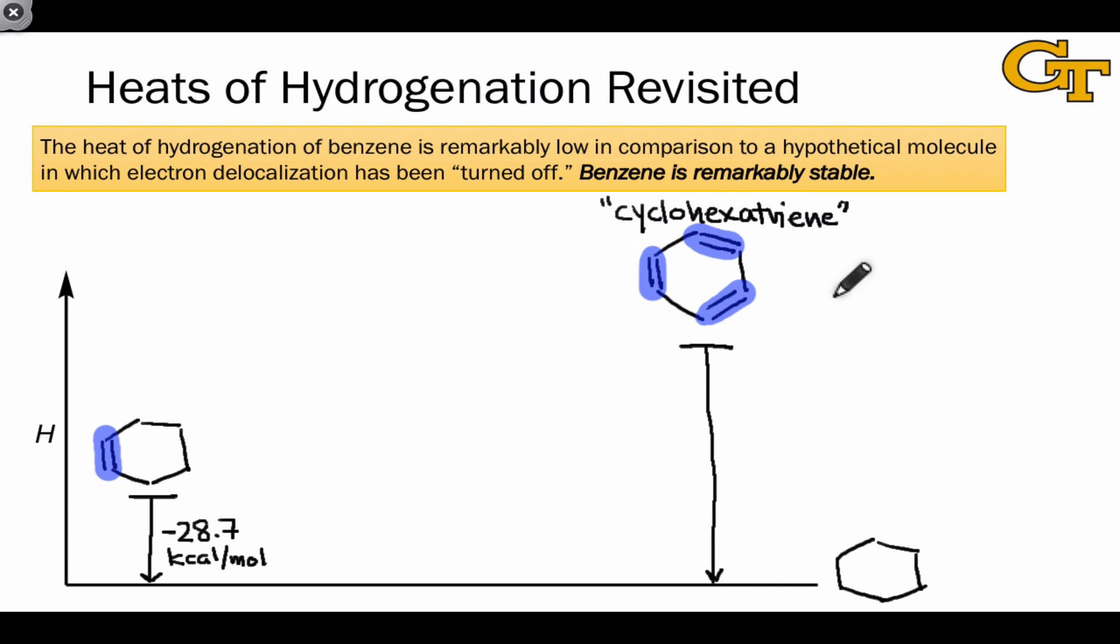the simplest guess is that because there are three times as many double bonds in cyclohexatriene as there are in cyclohexene, three times the amount of energy will be released when cyclohexatriene is hydrogenated. And so we can estimate the heat of hydrogenation of this molecule as -28.7, the enthalpy of hydrogenation for cyclohexene, times three. This comes out to -86 kcal/mol.